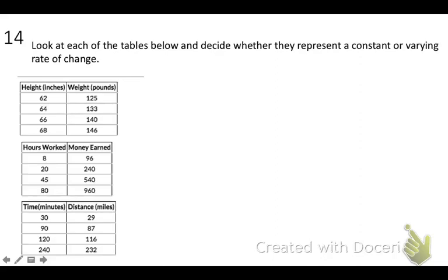Look at each of the tables below and decide whether they represent a constant or varying rate of change. So, big words here are constant and varying. If it's constant, it doesn't change. That would be a proportional relationship, something that is a straight line. It does not change. Varying means that the rate of change jumps all over the place.